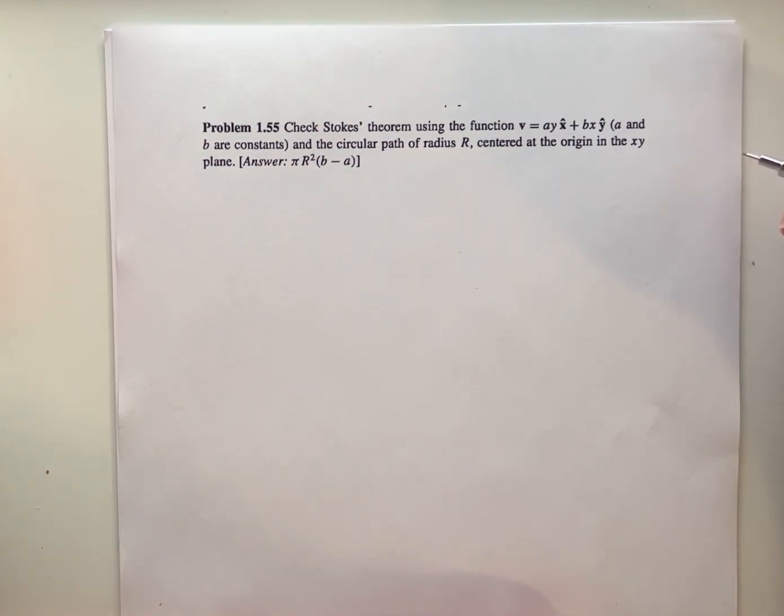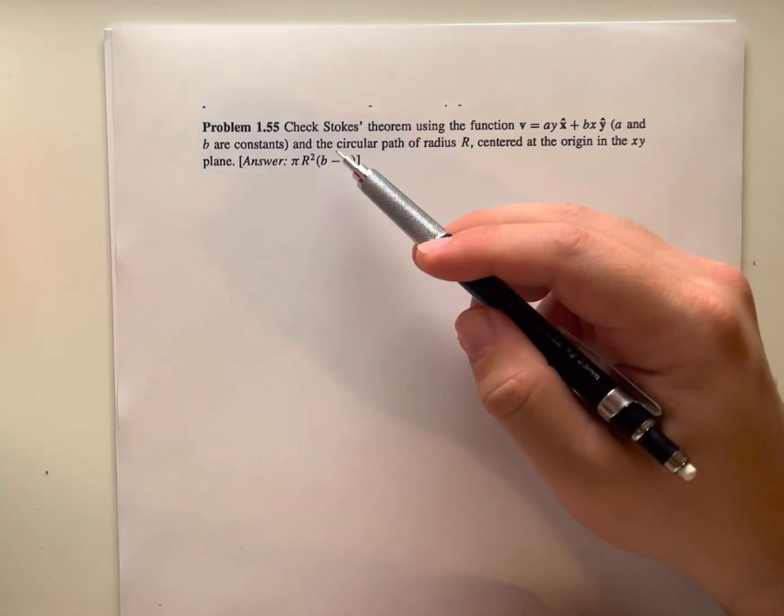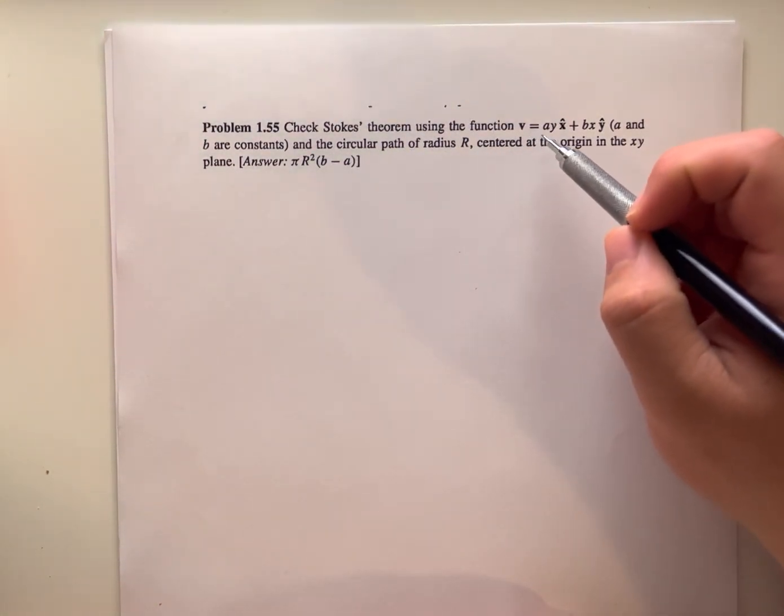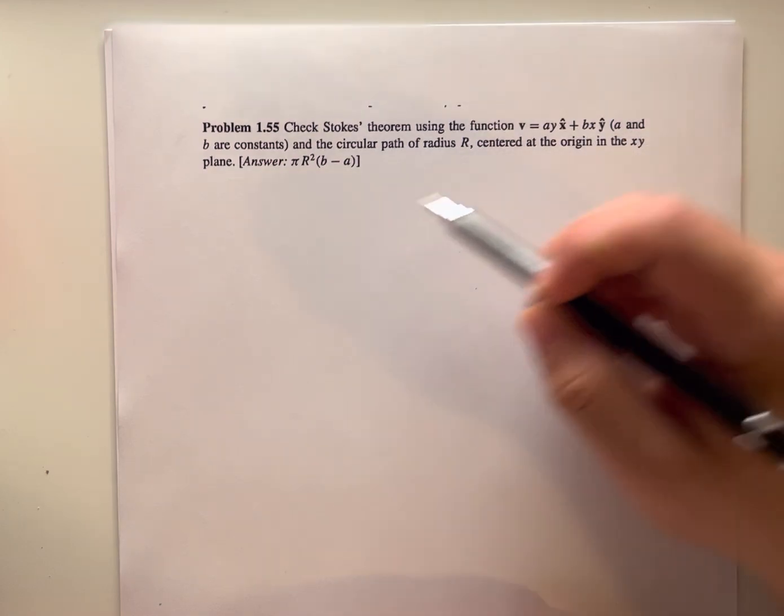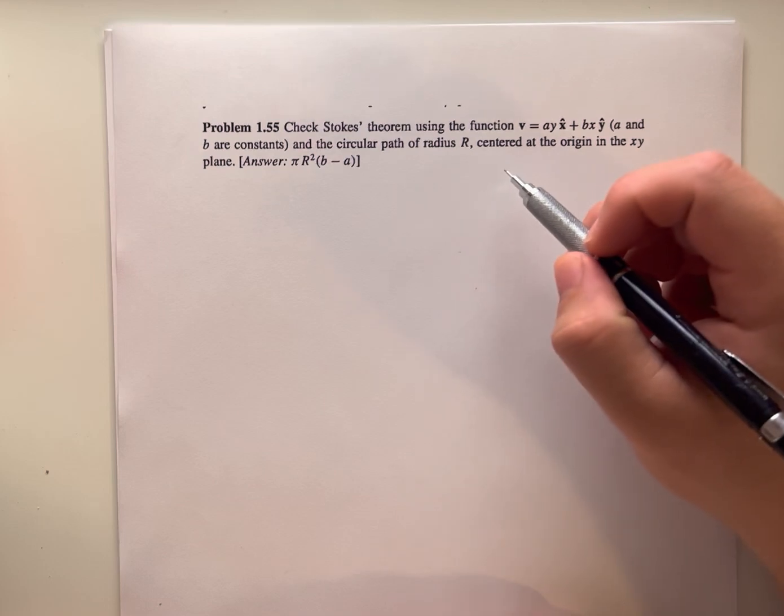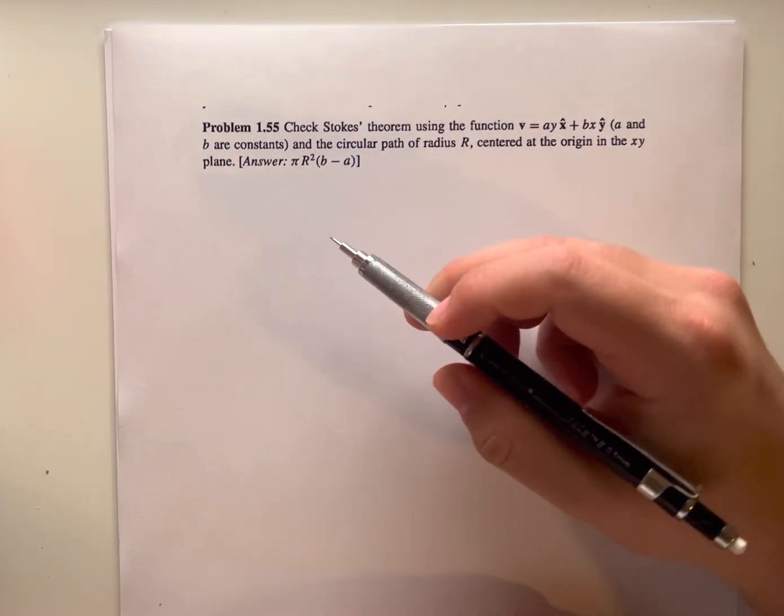Today I'm going to be solving problem 1.55 from the book Introduction to Electrodynamics by David J. Griffiths, where the problem states: check Stokes' theorem using the function v equals a*y*x-hat plus b*x*y-hat, where a and b are constants, and the circular path of radius R centered at the origin in the x-y plane.